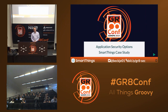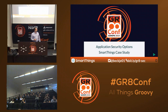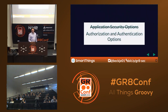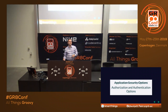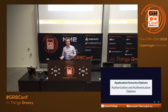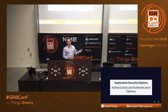Welcome everyone. This is application security options — a SmartThings case study. If you want the slides, they should be up already at that bit.ly link, which will be up throughout the slide deck. Turns out 'application security options' is not the best name for the talk. A slightly better name would be 'authorization and authentication options.' If that's not what you signed up for, I misled you — I'm sorry. Feel free to catch the other talks; I will not be offended.